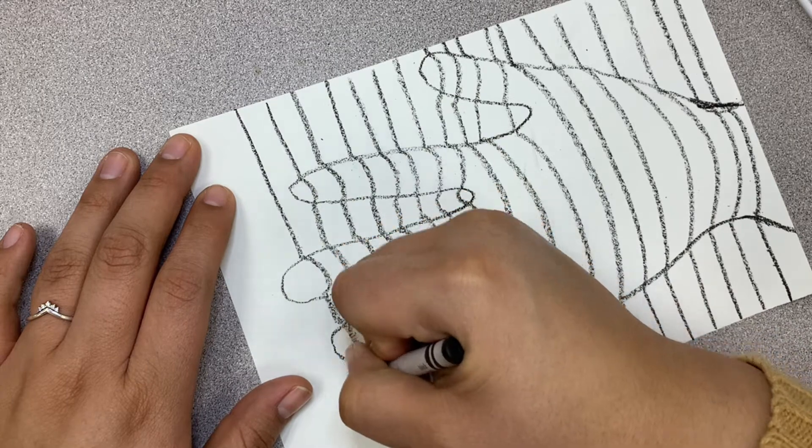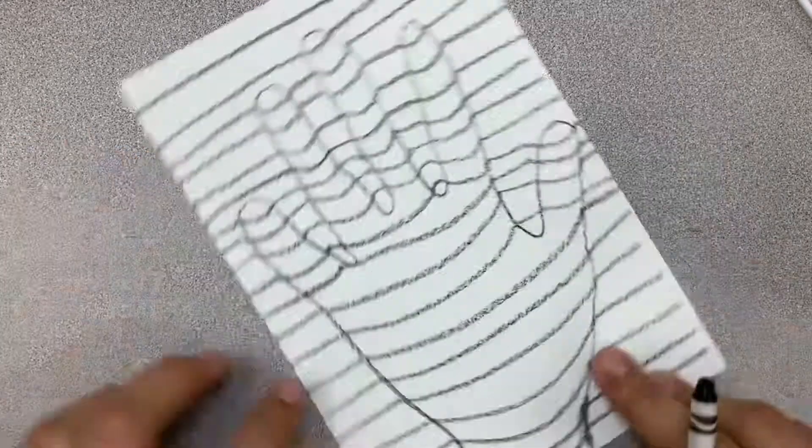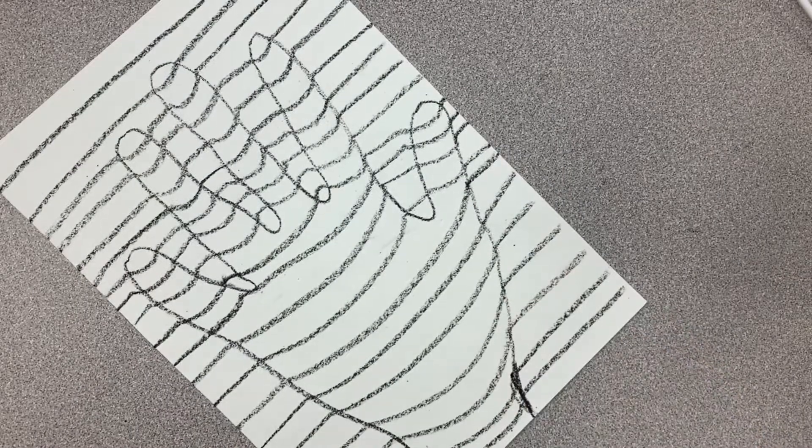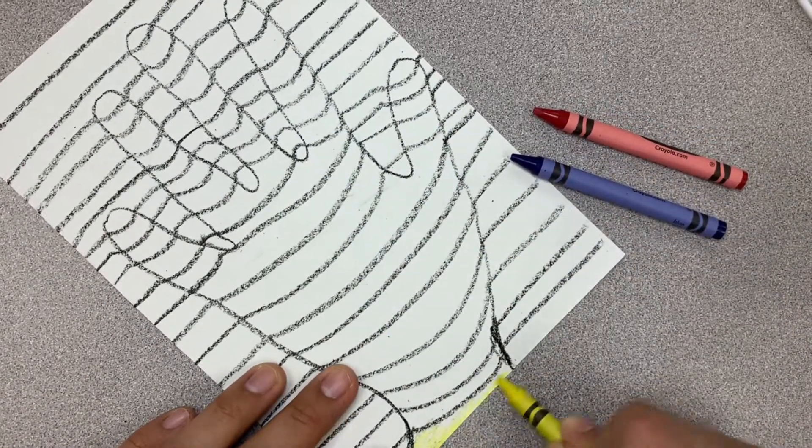We're going to mess up sometimes, and there's no mistakes in art, just happy accidents. There you go. Next I'm just going to color it. I use my primaries, my secondaries for this one, and that's pretty much all I do.